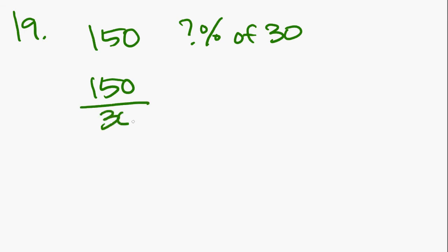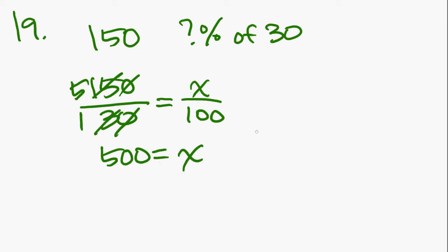19 says 150 is what percent of 30? We can use that ratio, the percentage ratio that we had set up previously to figure out, to solve this equation. Remember that they're saying 150 is what percent of 30? That's the same as saying 150 over 30 equals what portion of 100? Yeah? So cancel out the zeros. 15 divided by 3 is 5. And then you can cross multiply. So 500 equals x. And that is E.